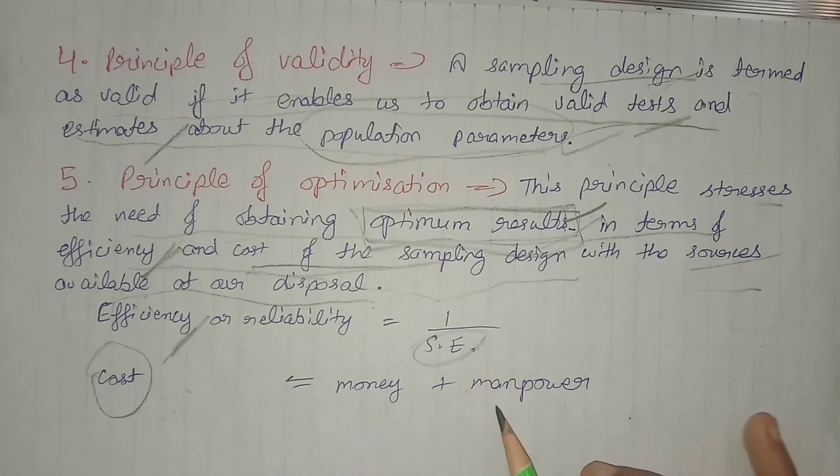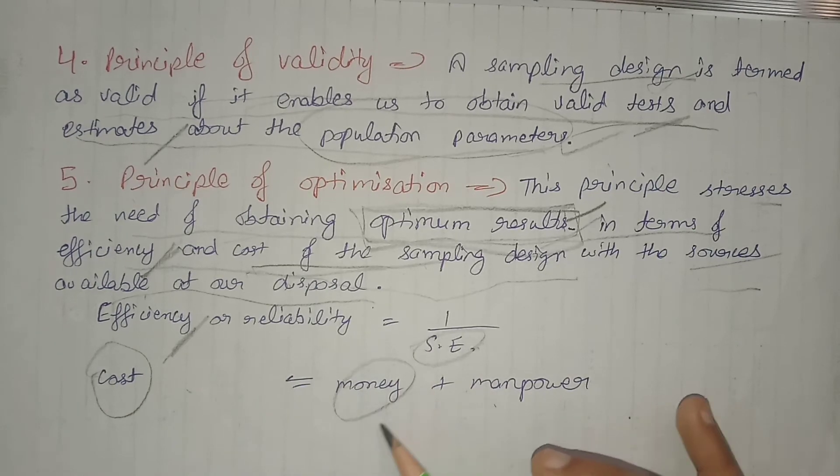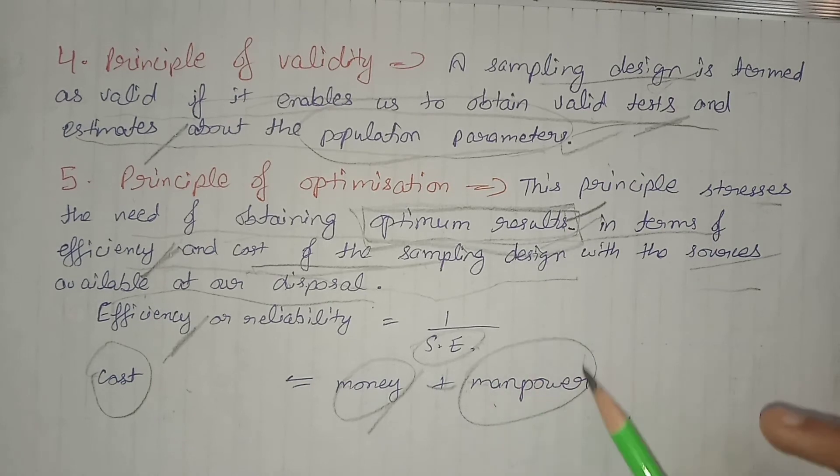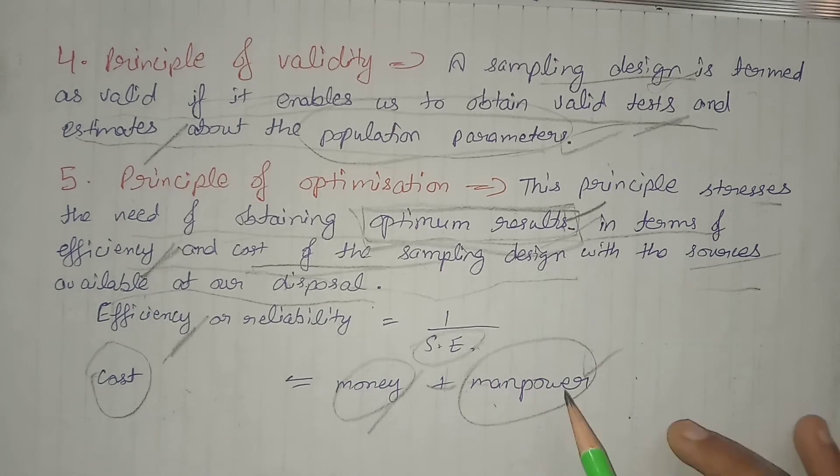The cost is the money, that is, overall how much money is being spent on the sample plus how much manpower is being used in the sample. So these were the five basic principles on the basis of which our sampling method is based.